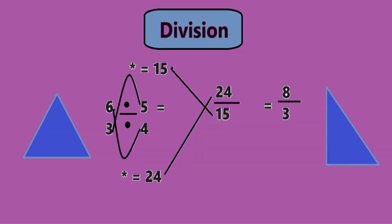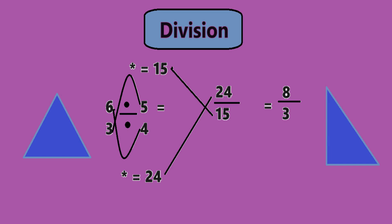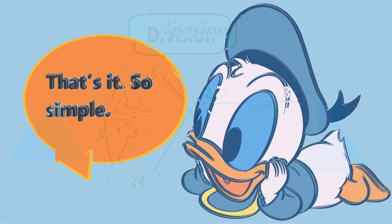Now let us take the second example: 6 by 3 divided by 5 by 4. Now cross multiply: 6 into 4 which will give us 24, and that is the numerator. And 3 into 5 which gives us 15, and that is the denominator. 24 by 15, and that gives the answer 8 by 5. That's it, so simple.